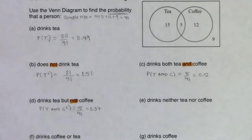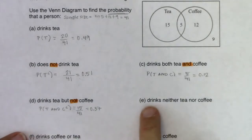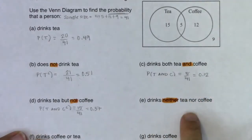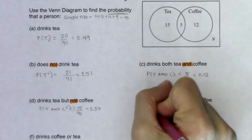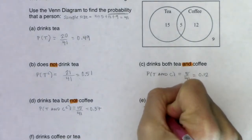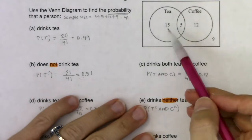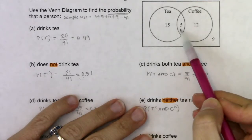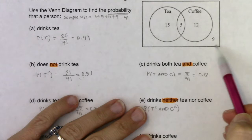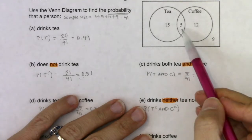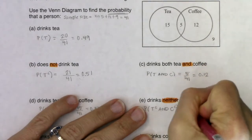For part E, the word 'neither' tells us we want the probability that a person drinks neither tea nor coffee. These folks don't drink tea and don't drink coffee — that's the probability of T-complement AND C-complement. Those folks are outside both circles in the Venn diagram: the 9 people out in the rest of the universe. So 9 out of 41.